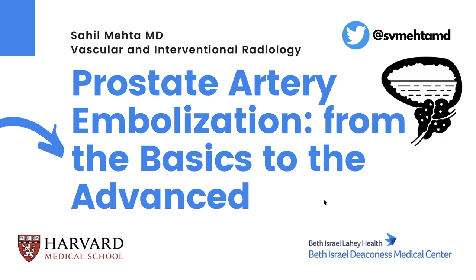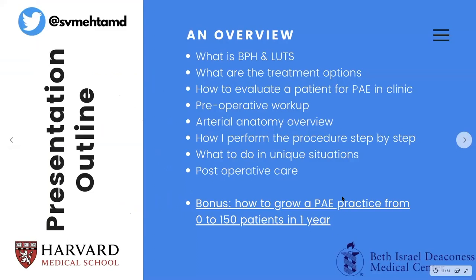I'm going to try to go from the basics all the way to what I call the advanced, which includes unusual situations you may run into for PAE. There are a lot of courses out there, but I'm trying to condense almost all of it into one hour, so I'll skip some things and go into more detail on others. Here's a general overview: we'll cover what is BPH and LUTS, treatment options, how to evaluate a patient for PAE in clinic, the pre-op workup, arterial anatomy, how to search for the prostate artery step-by-step, the entire procedure step-by-step, unique scenarios, post-op care, and how we grew our practice.